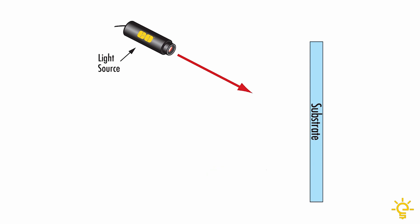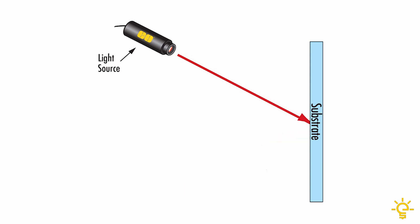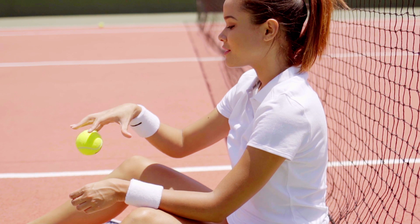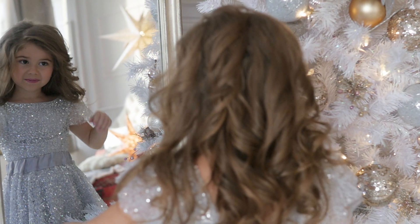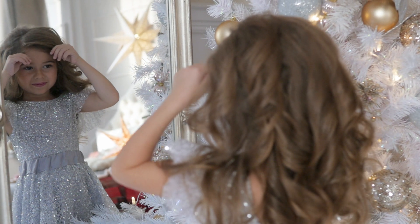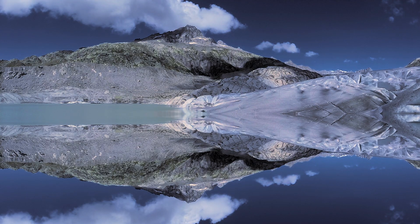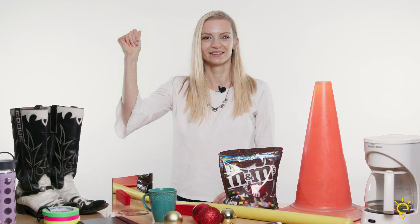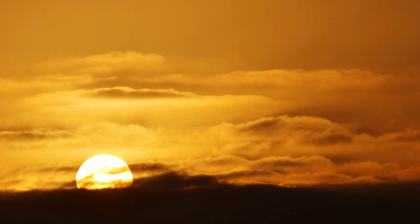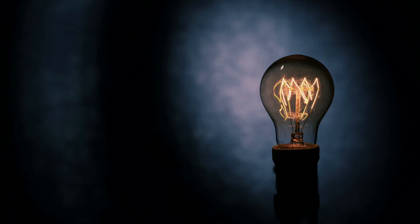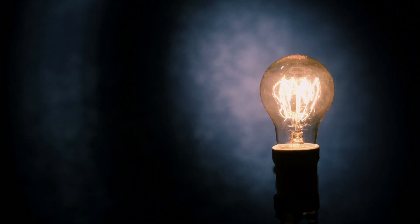Reflection occurs when a ray of light moves in one direction, hits a surface, and then moves back in another direction. You can think of reflection of light as the bouncing of light. You may already know that reflection allows you to see yourself in a mirror or any other shiny object, but did you know that reflection is what allows you to see every single object that does not produce its own light? Basically, any object that is not the sun or does not contain a light bulb can only be seen because of reflection.